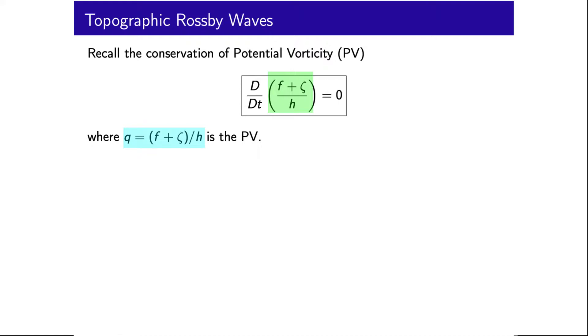We now consider the case that there is a variable depth H. When we had the beta plane approximation, the expression for potential vorticity became f₀ plus βy plus ζ on H. Now we want to consider the case that f is constant but allow H to vary.